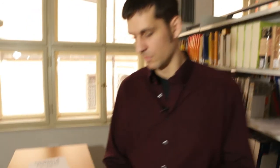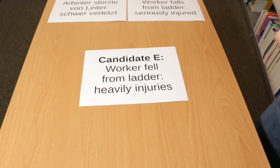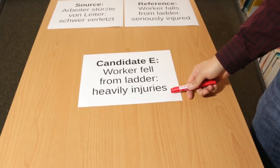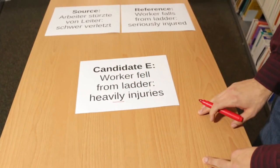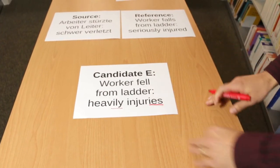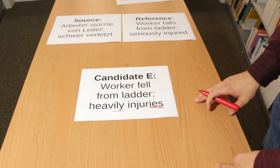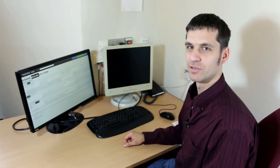Different annotators may have different opinions, and also the intended use plays a certain role. For post-editing, for example, a dropped negation is just a tiny edit, but it destroys the meaning completely. So what if we just marked what is wrong in the sentence, and then someone else would decide how important the error is? Candidate E shows that this is also not a perfect method: "Worker fell from ladder, heavily injuries." Here we can either fix the ending "heavily" into "heavy injuries," or fix the ending to "heavily injured." It is better to agree on a reference translation if we want to mark deviations from it.